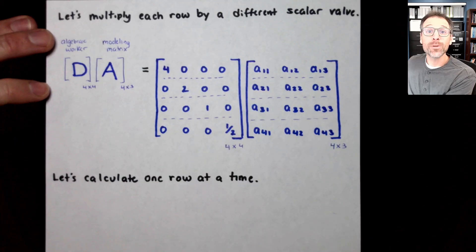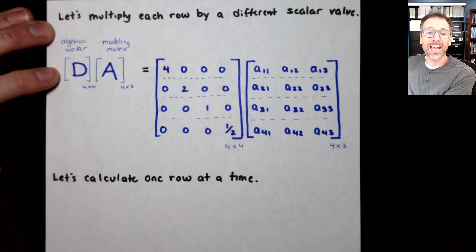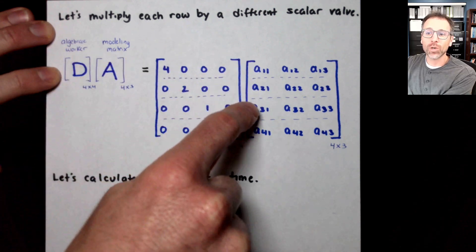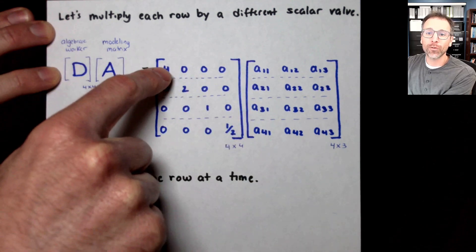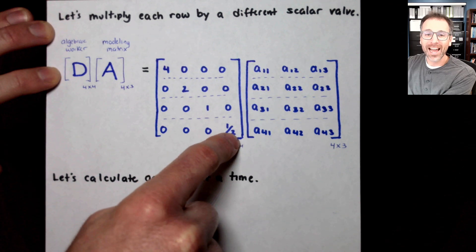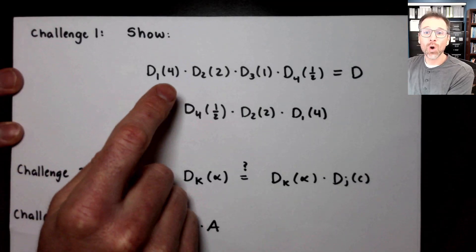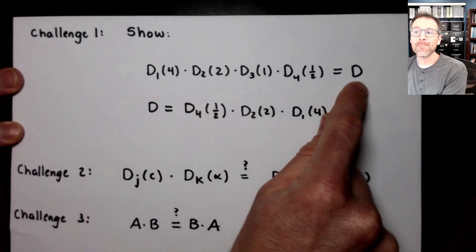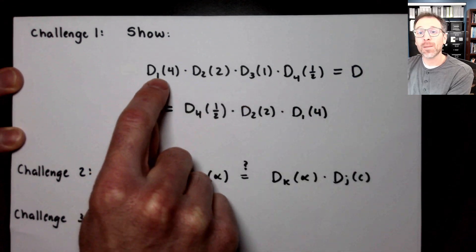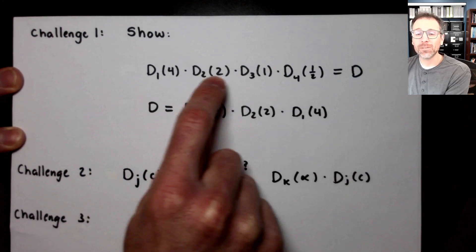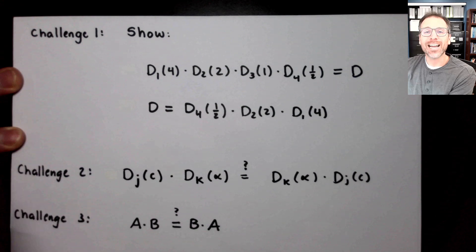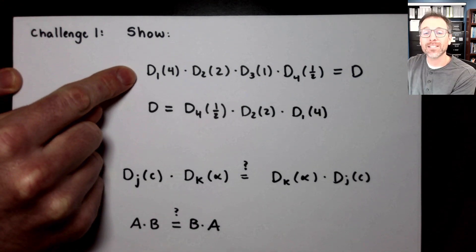This leads really beautifully into our community challenge of today. Remember that in this problem, we wanted to multiply each row by a different scalar. Those were four, two, one, and one half. My community challenge for you all is to actually show that that matrix D that we multiplied is actually the product of four different dilation matrices. If you need help remembering what a dilation matrix is, go back and watch the videos on that subject.